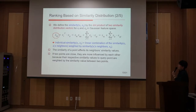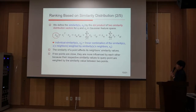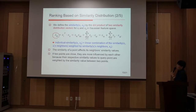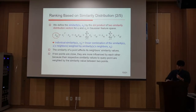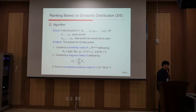This means that the similarity of a point affects each neighbor's similarity value. It means that if two points are close, they are more influenced by each other because their respective similarity values to the query point are weighted by the similarity value between the two points. This is the ranking algorithm based on similarity distribution.